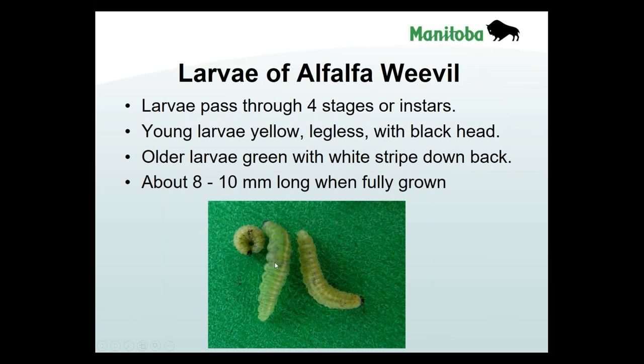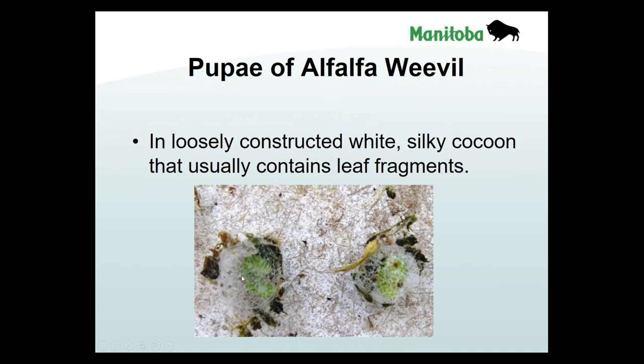One distinctive feature of alfalfa weevil larvae is a white line running right down the back of their body. There's one other beetle larva with similar markings in alfalfa — the clover leaf weevil — but clover leaf weevil has more of a light brown head, while alfalfa weevil larvae have more of a black head. They're defoliators that like to feed high on the plant — the upper leaves, buds, and flowers. Around now you'll start noticing silky cases on plants or on the soil — if you look inside you'll see the green larva that has stopped feeding and made a silken case for the pupal stage.